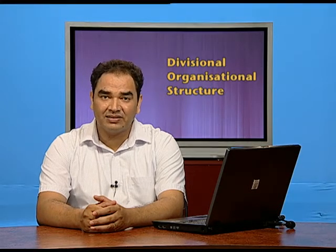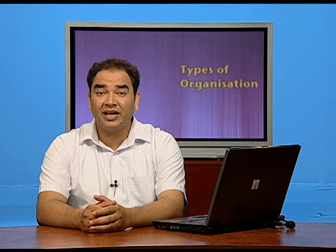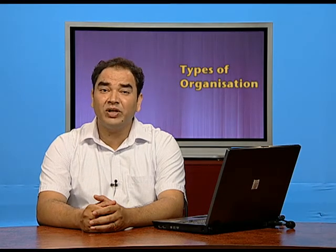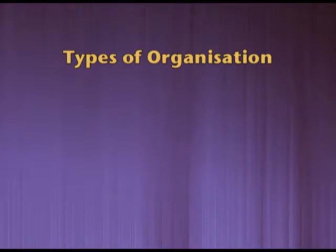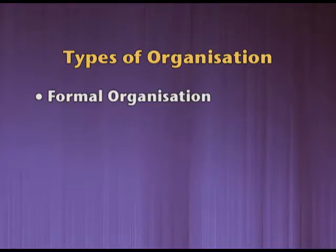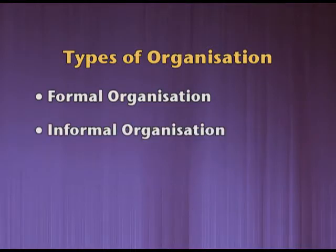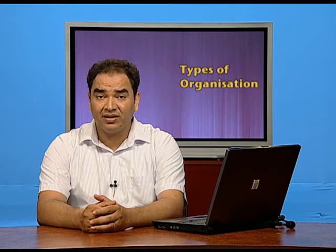Now we have discussed the Divisional Organizational Structure, its merits and demerits. Now, there are two types of organization: first, the formal organization, and second, informal organization. The formal organization is the one which is deliberately established. It helps the business in attainment of organizational objectives as systematic working takes place in that organization.